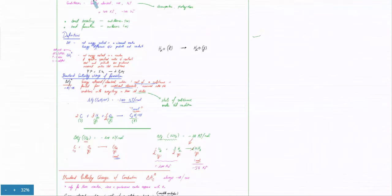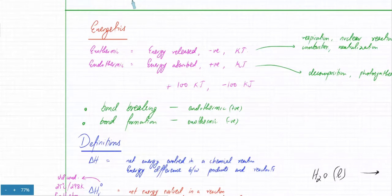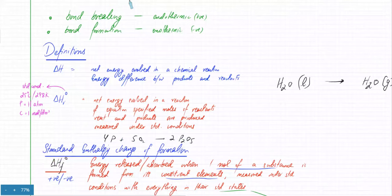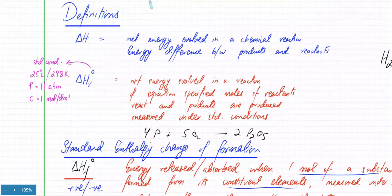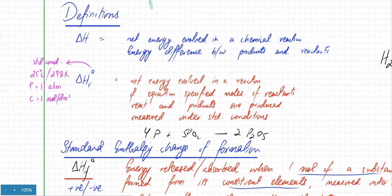Starting with the first one: the general label is enthalpy change, which applies to any enthalpy change and is the net energy involved in the chemical reaction. If you're talking about the enthalpy change of reaction — where there's a small 'r' written and a standard symbol — that means you're measuring it under standard conditions, and 'r' means the reaction involves exactly the specified stoichiometric moles reacting. That is enthalpy change of reaction.